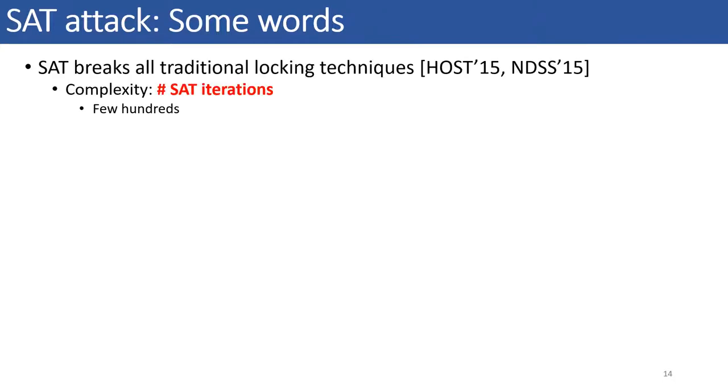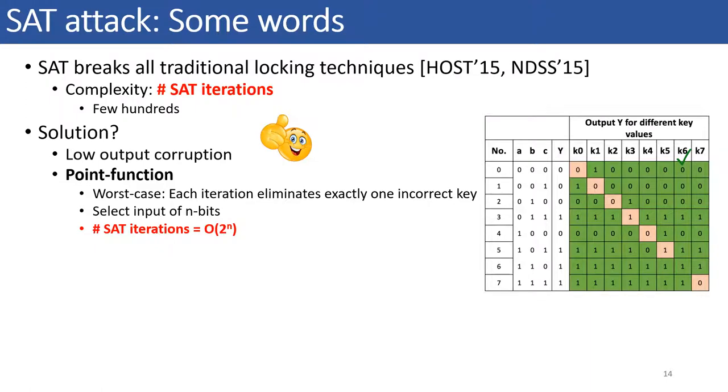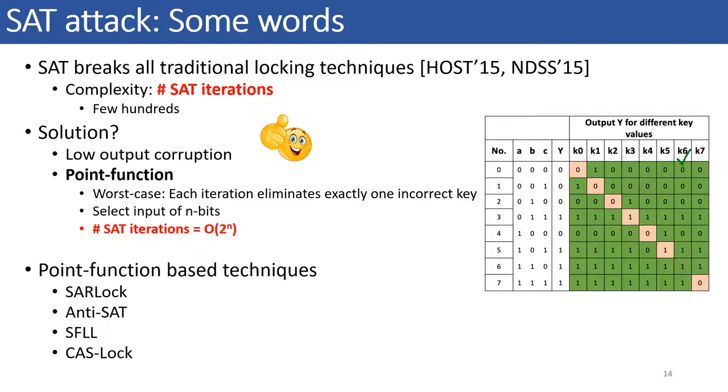Now, let me provide you all with a brief background on SAT attack and the point function based schemes. SAT attack was proposed in 2015 which breaks traditional high output corruption locking techniques by pruning out multiple incorrect keys in each iteration. Hence, the complexity of SAT attack is measured in the number of SAT iterations and for traditional locking techniques the number of SAT iterations lies in the range of 100. A possible direction to thwart the SAT attack is to design a low corruption scheme where the SAT attack is forced to eliminate only one incorrect key per iteration, thereby exponentially increasing the attack complexity. Some examples of low corruption techniques use point functions in the design such as SARLock, ANTI-SAT, and SFLL. CASLOCK is a variant of ANTI-SAT where the point function is replaced by a diversified version. However, all these SAT resilient techniques are vulnerable to structural attacks. And as mentioned in this work, we will investigate a proposed structural attacks on the CASLOCK defense and its variants.